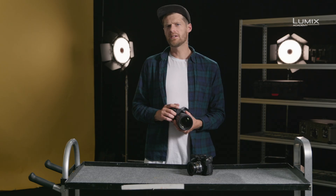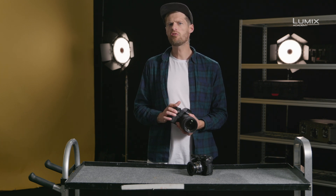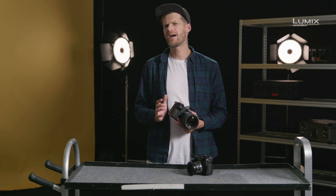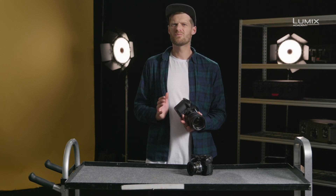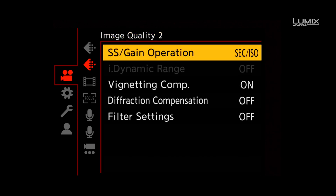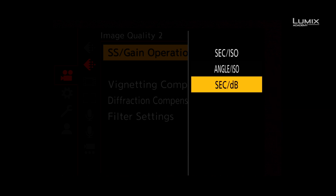Many filmmakers utilise narrower shutter angles, such as 90 degrees or 45 degrees, for creative purposes to give footage a more dramatic and realistic feeling. To activate the shutter angle in the S1H, simply go to the Image Quality 2 submenu on the Video Options and select Angle ISO. There is also an option to show ISO as gain values.